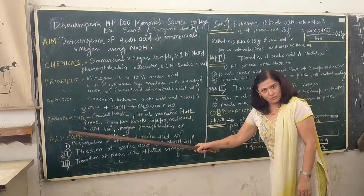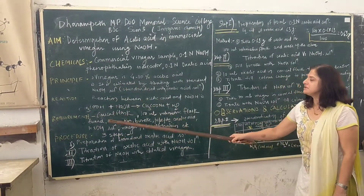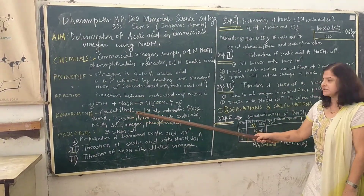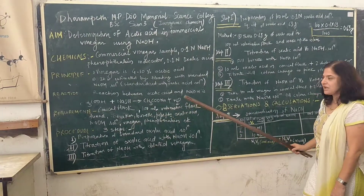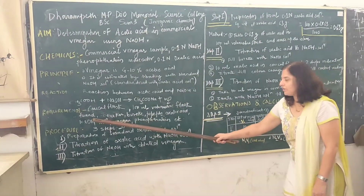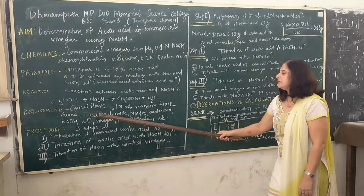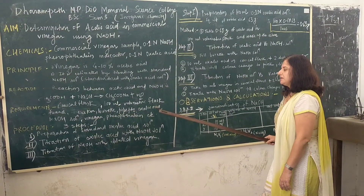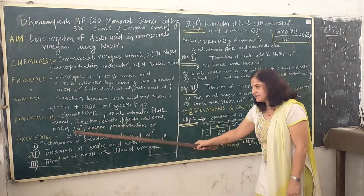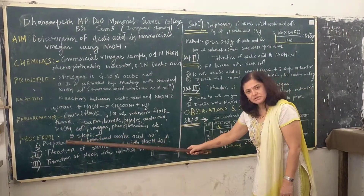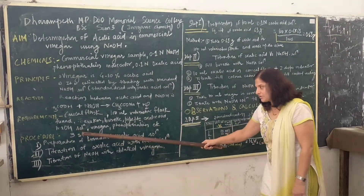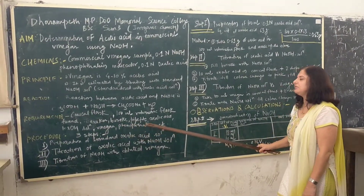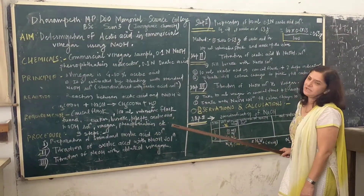The requirements for this experiment are: conical flask, 100 ml volumetric flask, funnel, beaker, burette, and pipette. The chemicals are oxalic acid solution, sodium hydroxide solution, vinegar sample solution, and phenolphthalein as an indicator.